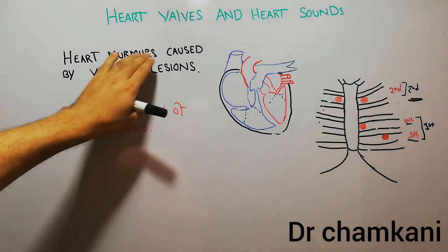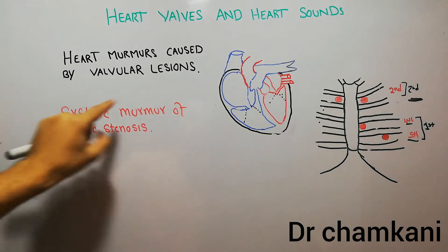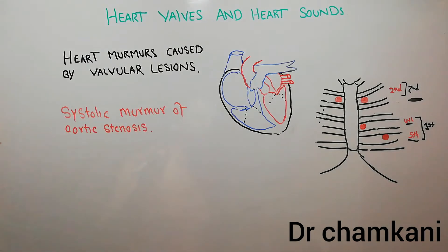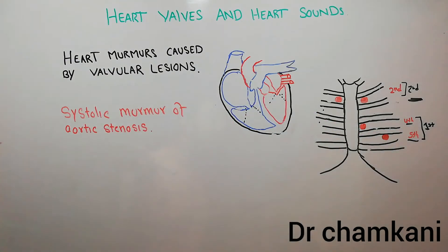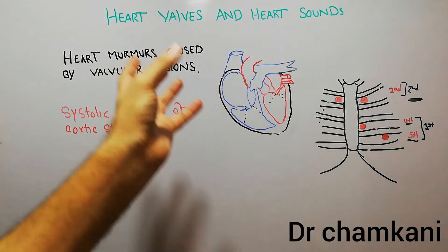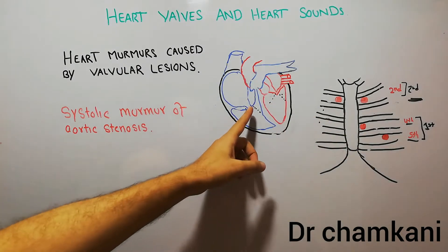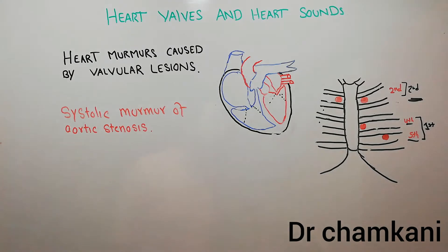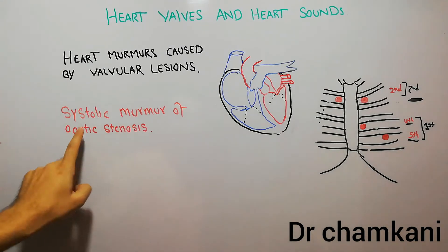Now we are going to discuss the heart murmurs that are caused by valvular lesions. The first murmur we have to discuss is the systolic murmur of aortic stenosis. Previously we discussed the heart sounds — the first and second heart sounds — and then we discussed the rheumatic valvular lesions. Today we are going to discuss the murmur of aortic stenosis.